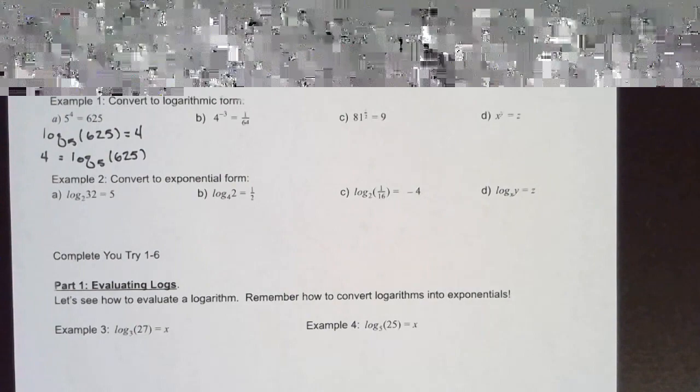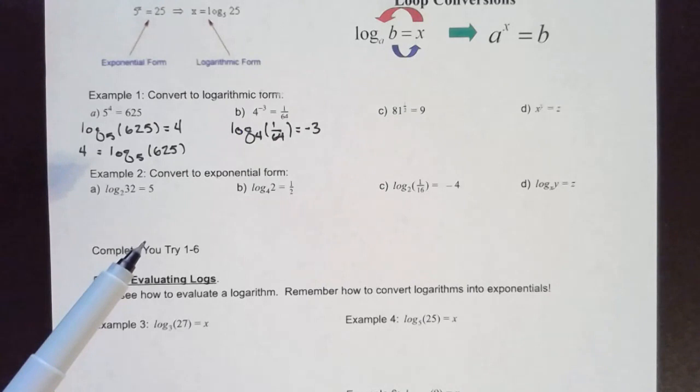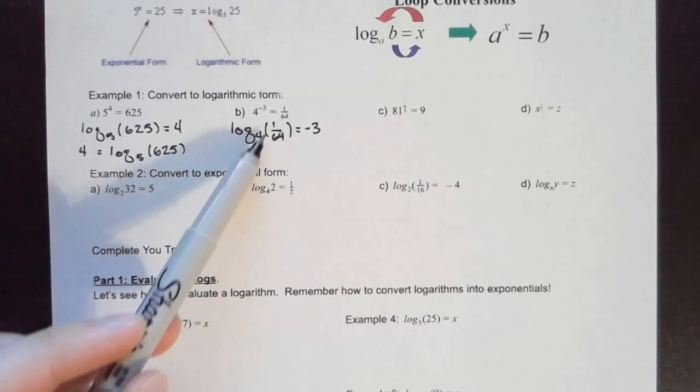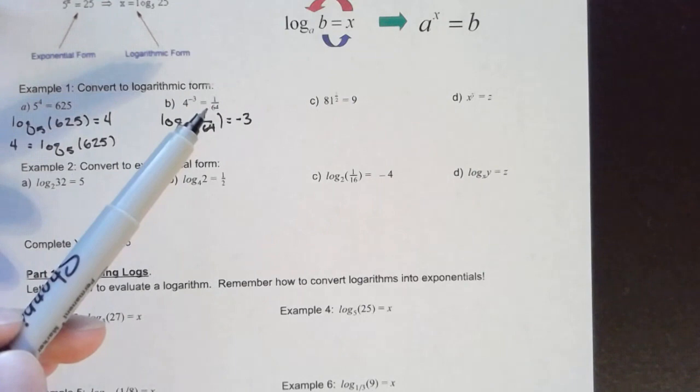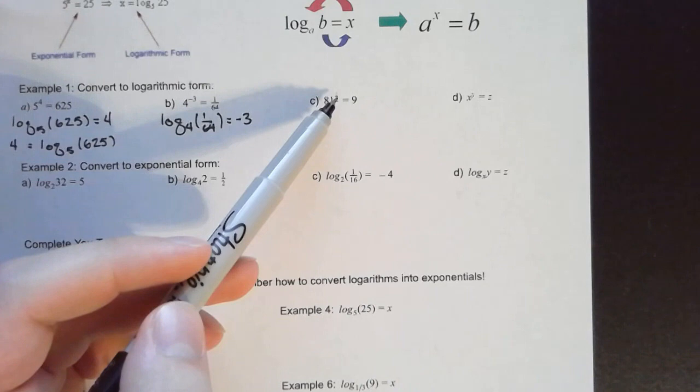You don't necessarily need parentheses here, but I'm using those to be extra clear that 1/64 is the argument and 4 is just the base of the log — similar to how we use parentheses when talking about f(x). This is log base 4 of 1/64. For part c, we have 81 to the 1/2 power equals 9.